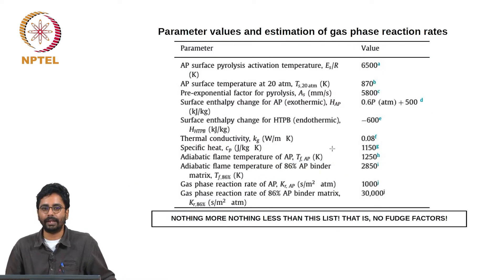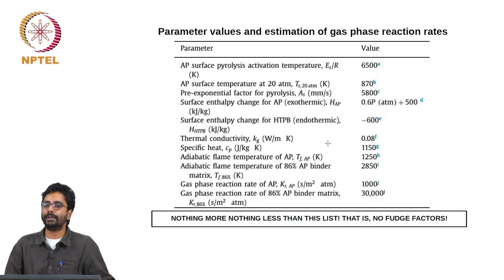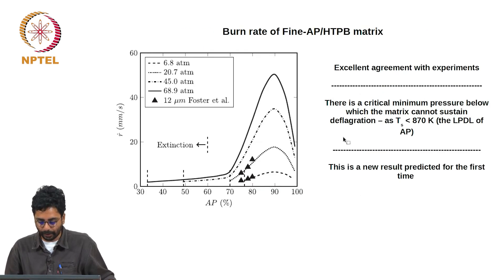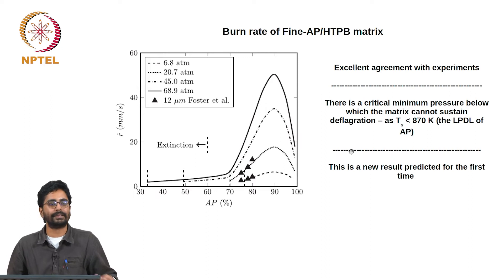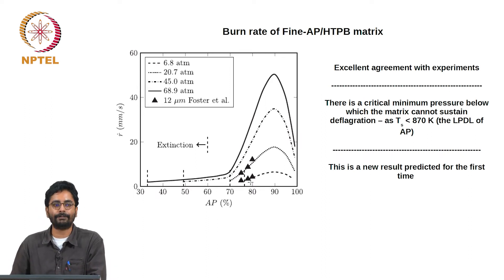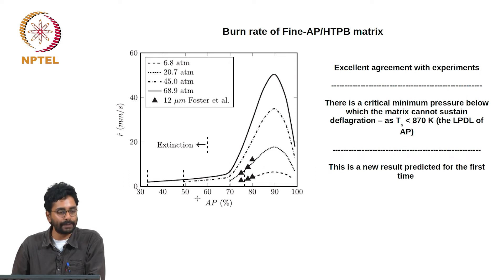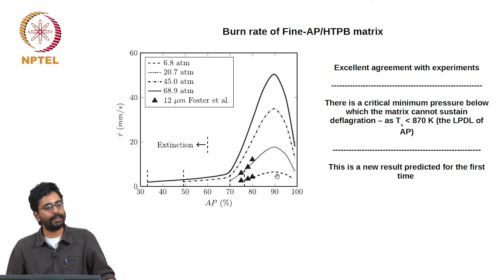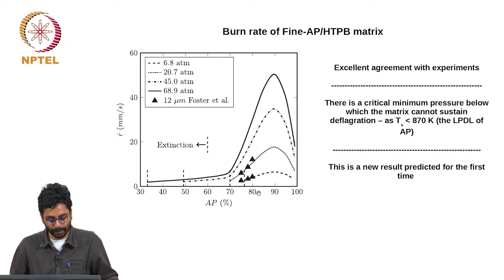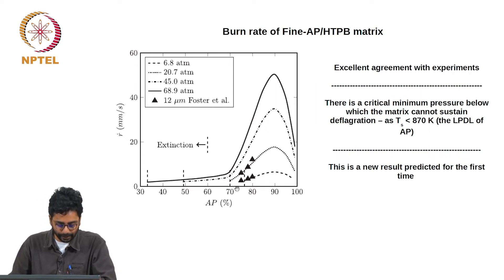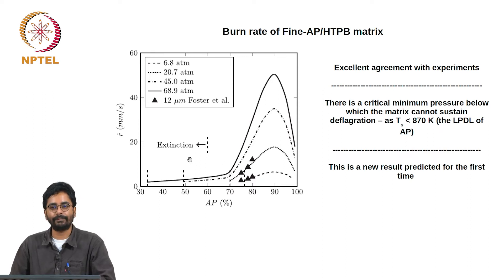The first two parts are done. We have converted the complex geometry into a statistical representation and obtained parameter estimates. Using this parameter set, calculations were made for homogeneous compositions with AP fraction ranging from 30 percent to 95-98 percent. Some limited experimental data was available and the predictions were in reasonable agreement. More importantly, there is a vertical line marked here — to the left it is marked as extinction.